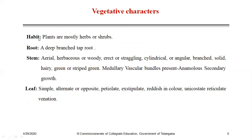Regarding vegetative characters and habit: plants are mostly herbs or shrubs. Root is a taproot system. Stem is aerial, herbaceous, and frequently so; rarely woody; erect or straggling; cylindrical or angular; branched and solid; hairy; green or striped green. Medullary vascular bundles are present. For example, Achyranthes aspera shows anomalous secondary growth.